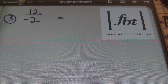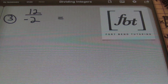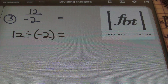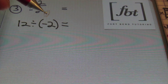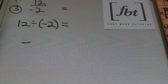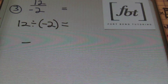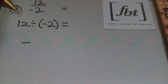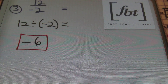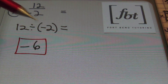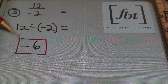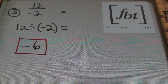Problem number three — note that a fraction is a division problem. This is 12 divided by negative two, and you could rewrite this as 12 divided by negative two. We have a positive divided by a negative, so I know my answer is negative. There is only one negative sign, so the answer is negative. 12 divided by two is six, so the answer is negative six — whether written in fraction notation or as a standard division problem.